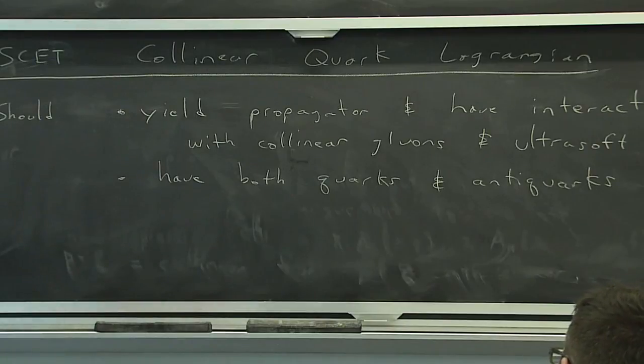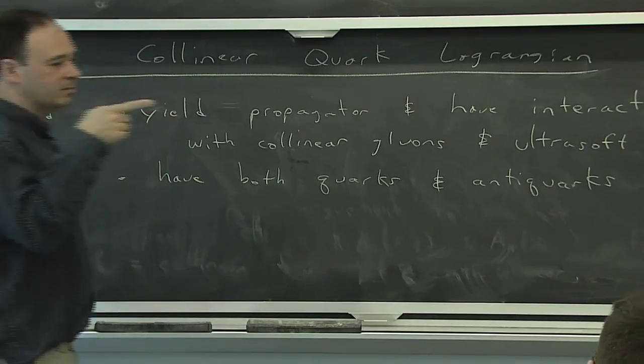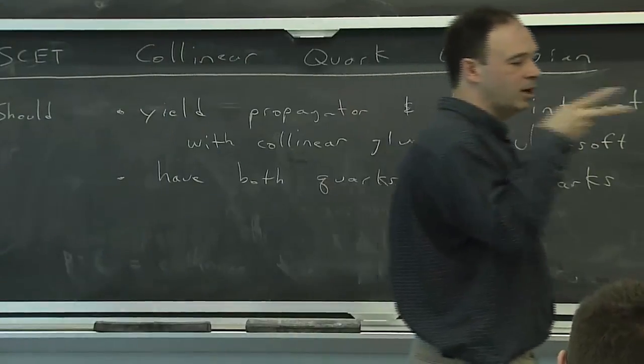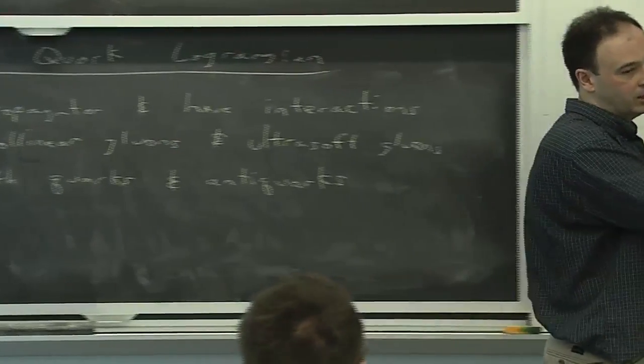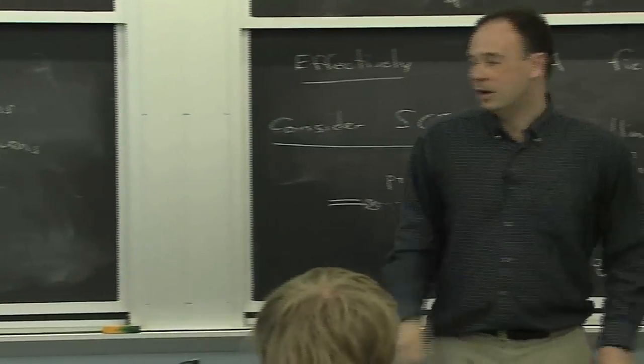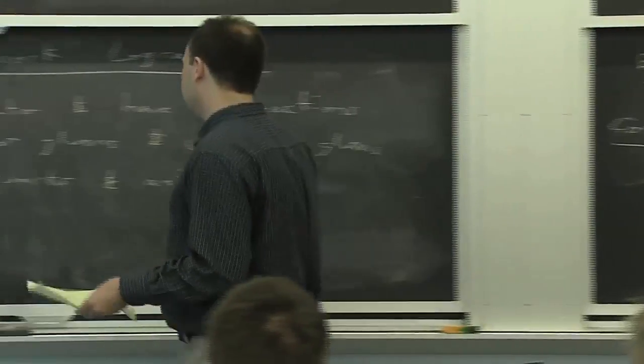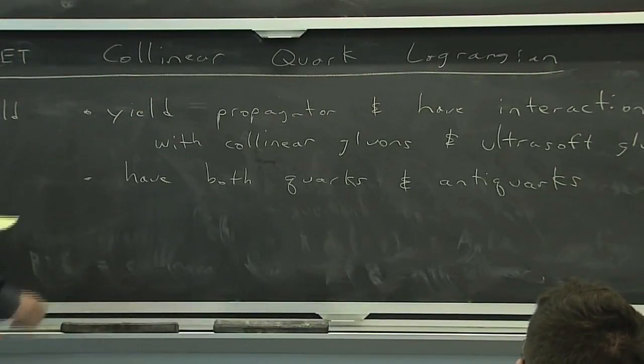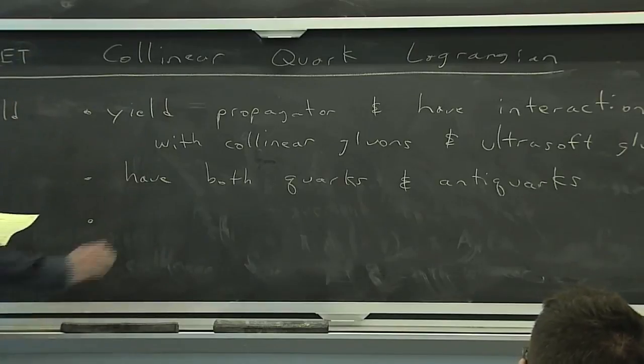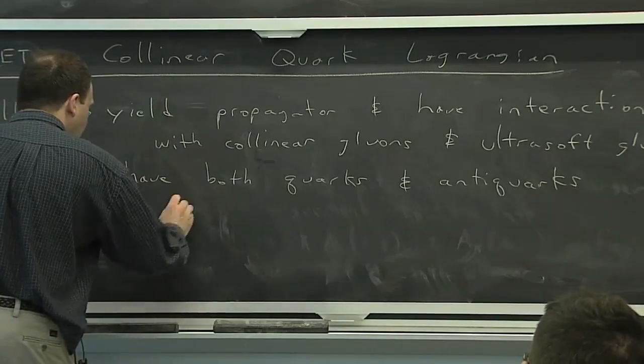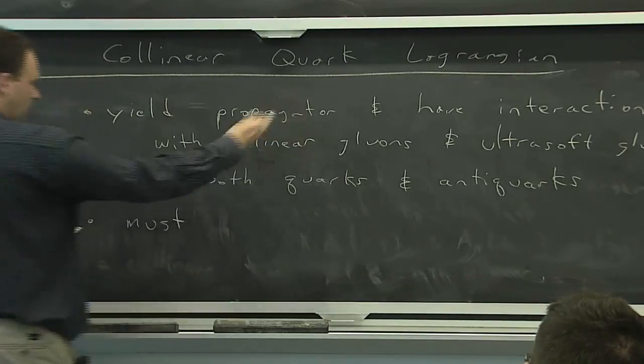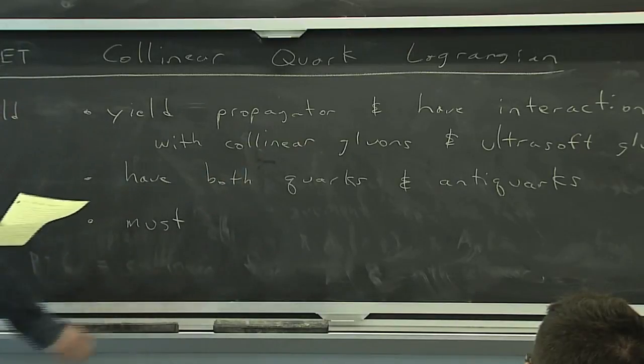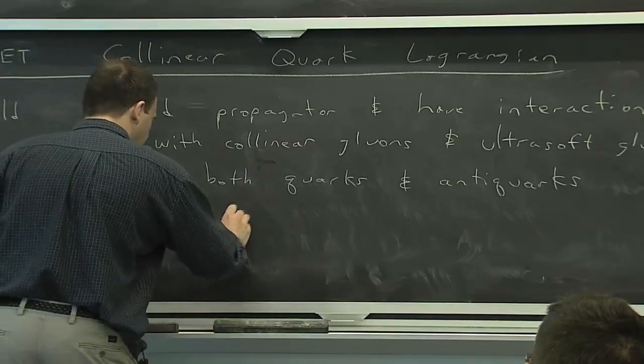And basically, that is just the statement that, say, you have a collinear gluon going along very quickly, it can create two collinear quarks and an antiquark. And if they're, again, collinear, that's something that has to be allowed to happen at order one in this effective theory. OK. So so far, so good. This is just saying, what kind of fields are we going to have in this Lagrangian?